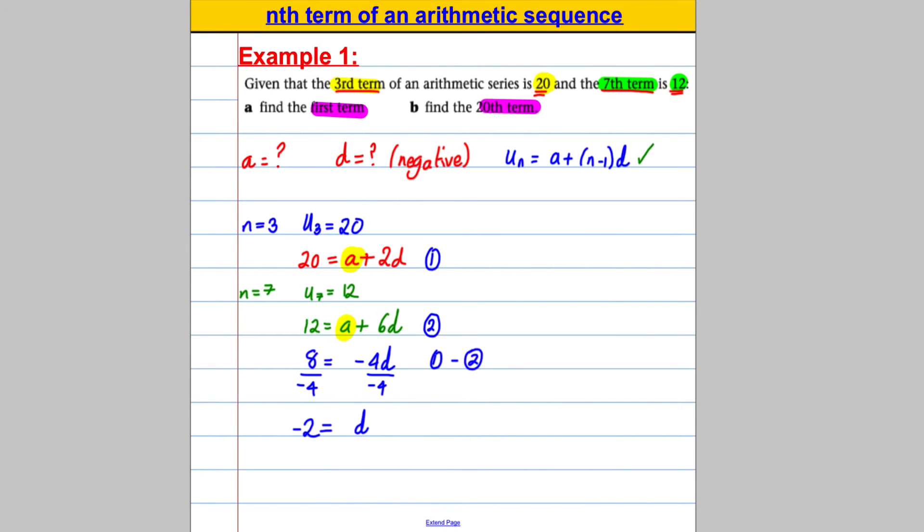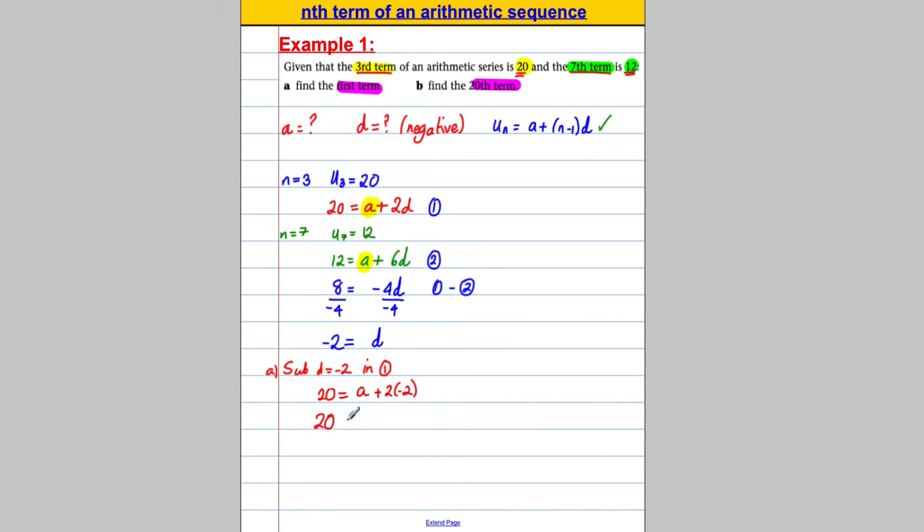Right, well part A did not ask me for that. It asked me to work out a. Well I can sub this back in. So sub d equals negative 2 into either equation 1 or 2. Let's just put it in 1. And I would get 20 equals a, which I don't know, plus 2 multiplied by negative 2. So that's 20 equals a subtract 4. And if I add 4 to both sides, a must be 24. And I'm done.